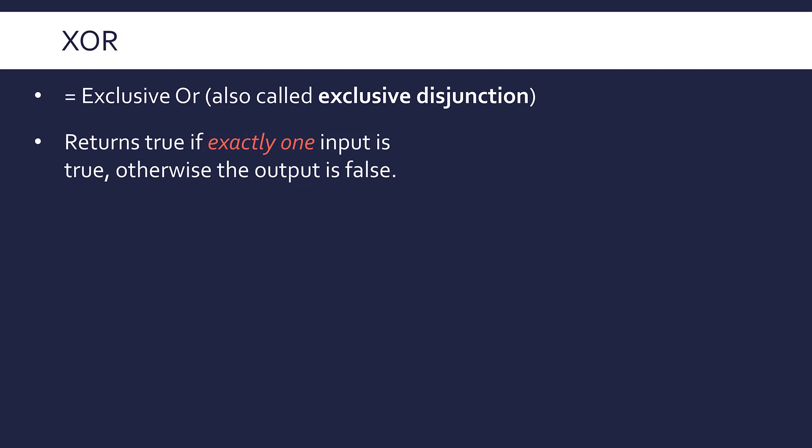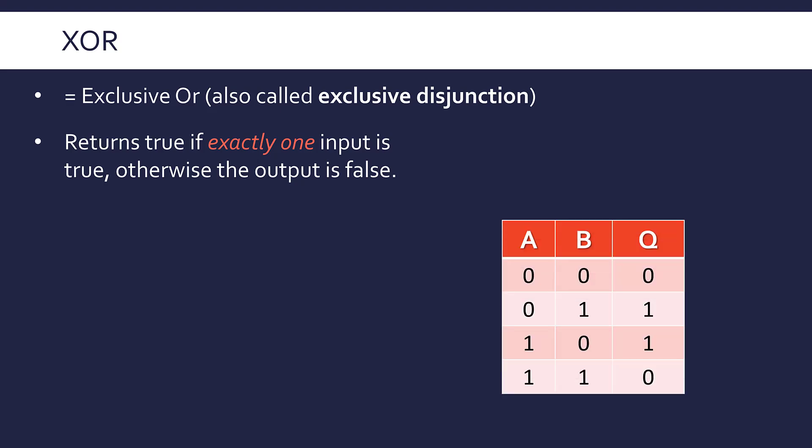The way XOR works is it will return true if exactly one input is true; otherwise it's going to return false. Let me show you the truth table for XOR to illustrate this. I'm using zeros and ones in this truth table — I could equally be using false for zero and true for one.